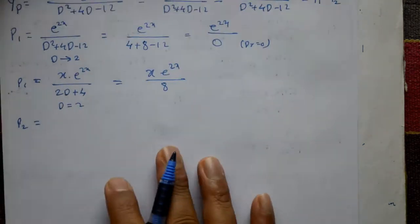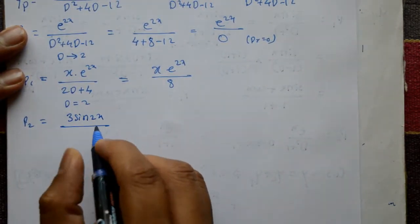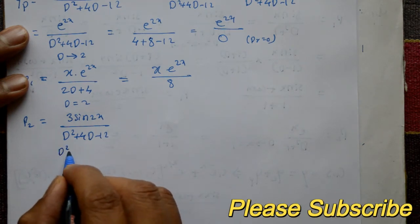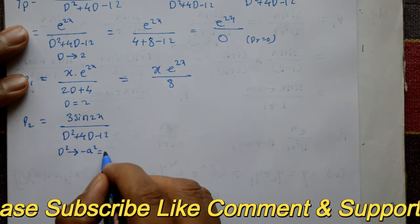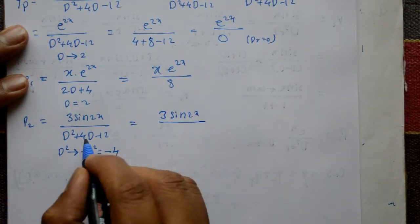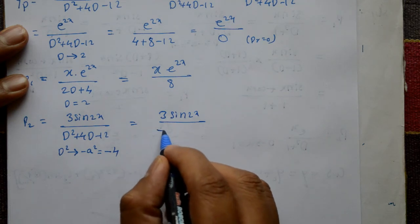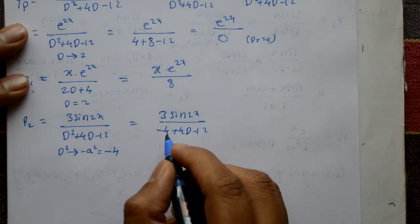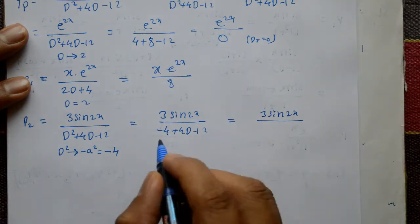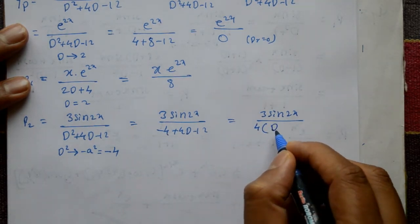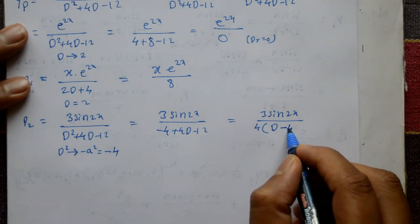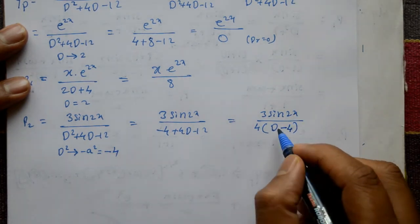Now P2: consider 3·sin(2x) / (D² + 4D - 12). This is Type 2, so substitute D² = -a² = -(2²) = -4. The denominator becomes -4 + 4D - 12 = 4(D - 4). This cannot directly apply Type 1, 2, or 3.